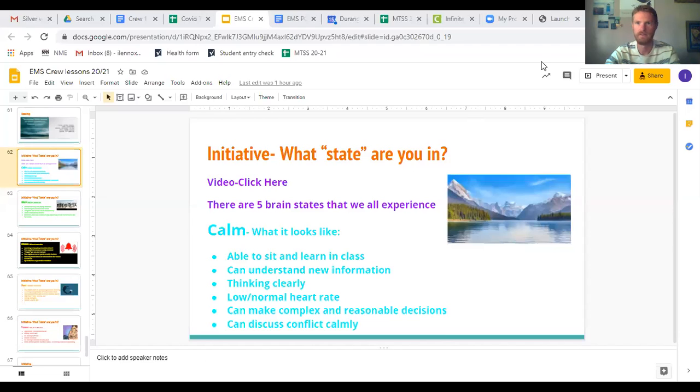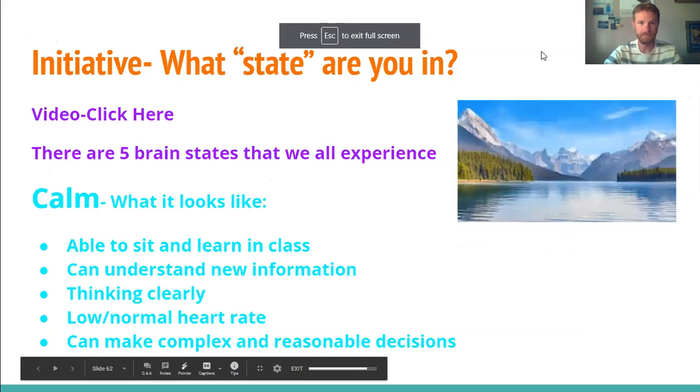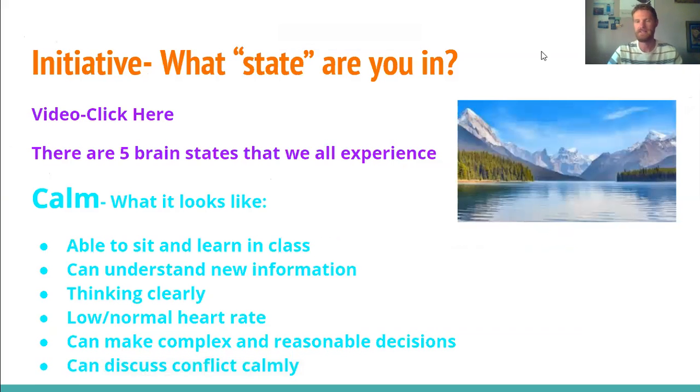I know it's complicated, and if you don't understand exactly what I've talked about, that's okay — I just wanted to give you a little bit of background. Now I'm going to talk about the brain states so you know the five different brain states and can have that language. There are five brain states, and we say that states become traits, because depending on the state you're in, you might display different traits as a person.